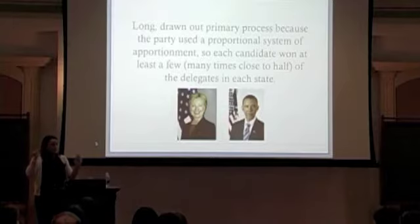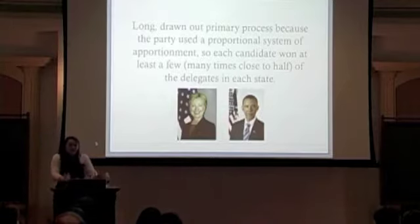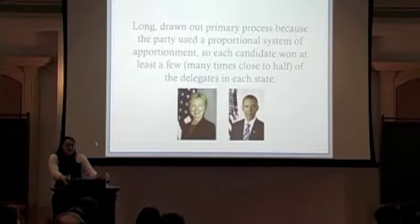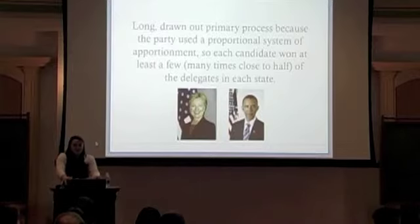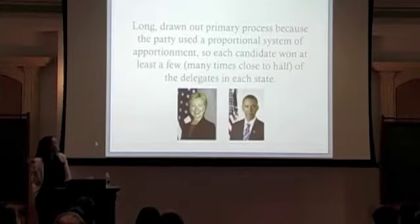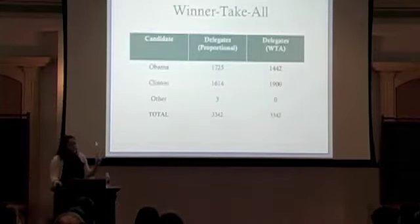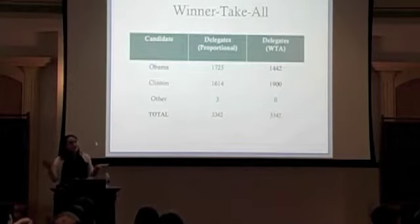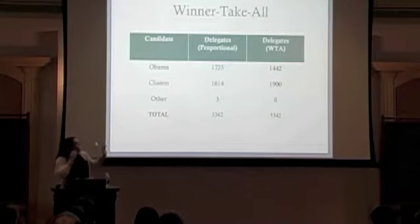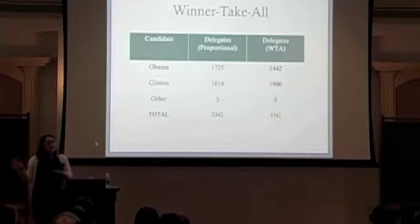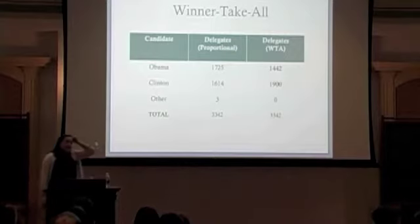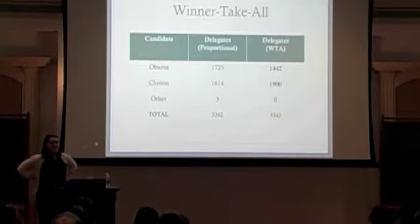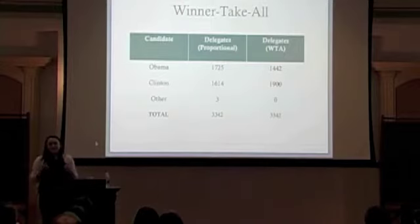It might seem like these are just two methods of arriving at the same result — if you win most of the vote, you get most of the delegates and you'll be the winner. But that is just not true at all. Looking at the Democratic race in 2008: going into the convention, what actually happened was Obama was leading Clinton by just over 100 pledged delegates. But if the Democrats had used the Republican winner-take-all method, Clinton would have been leading Obama by nearly 500 pledged delegates going into the convention. If you follow this stuff at all, that's huge. Clearly, the way that we count these things really does matter.